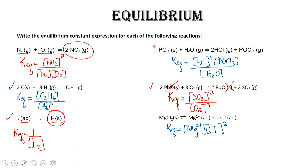Here we have PCl5 plus water produces 2 moles of HCl and 1 mole of POCl3. For our equilibrium expression, we have the concentration of HCl raised to the power of 2, times the concentration of POCl3 raised to the power of 1, all over the concentration of water. We do not include PCl5 because it is a solid.